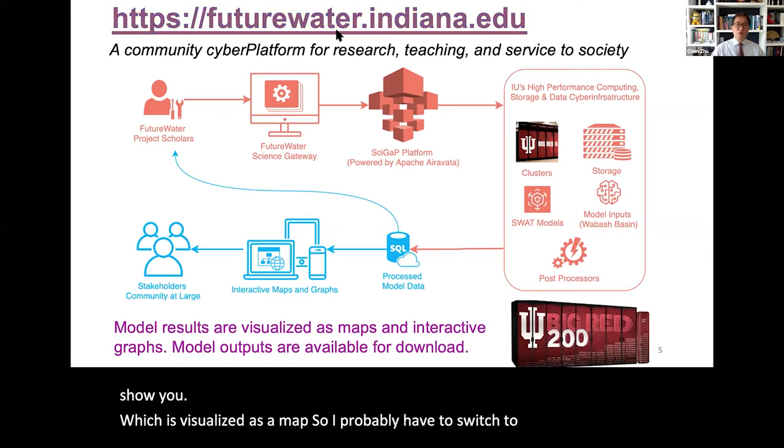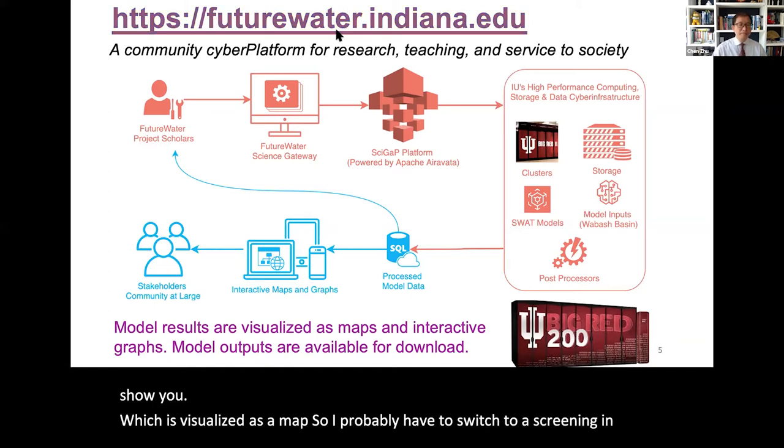We run this model on IU supercomputers. You also need a lot of storage space because the hydrological cycle is modeled on a daily basis — so you have over 100 years of daily data, and with 10 different climate models under different scenarios, we actually have 61 model runs altogether, producing a humongous amount of output data.